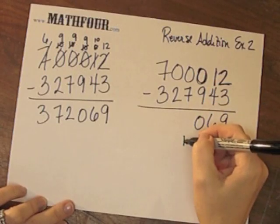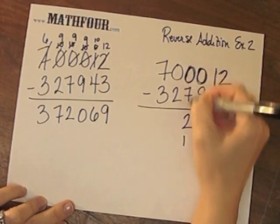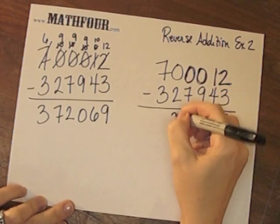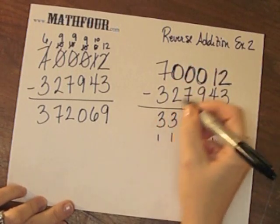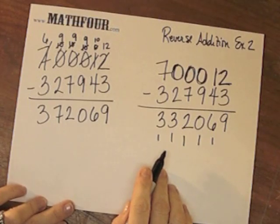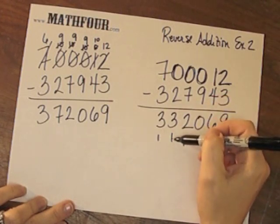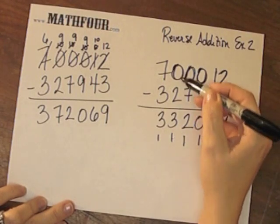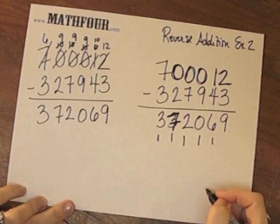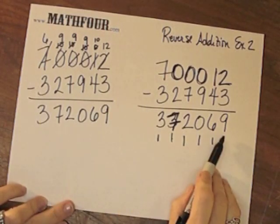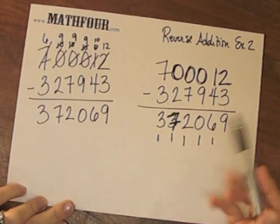7 plus 1 is 8, plus another 2 gives me 10, carry the 1. 2 plus 3 is 7, plus 3 is 10, carry the 1. And 3 plus 1 is 4, plus 3 is 7. Did I get the same answer? No — how did I miss that? 2 plus 1 is 3; to get to 10 I need a 7 there, which is 10, carry the 1 — and I'm still good.